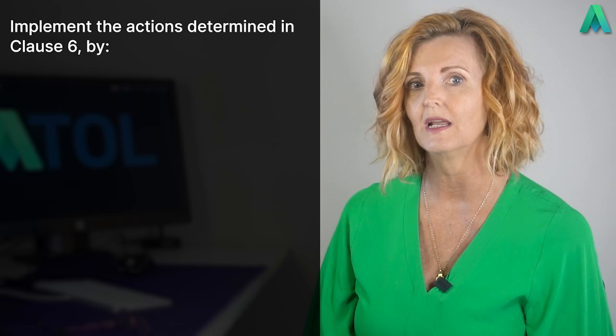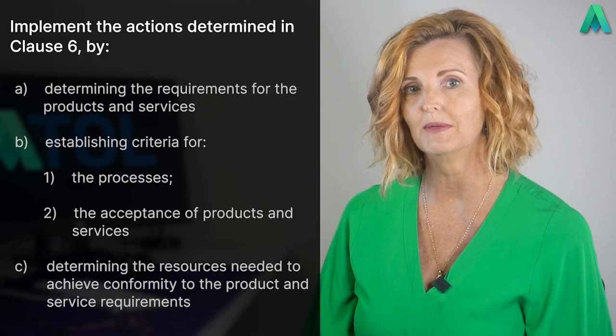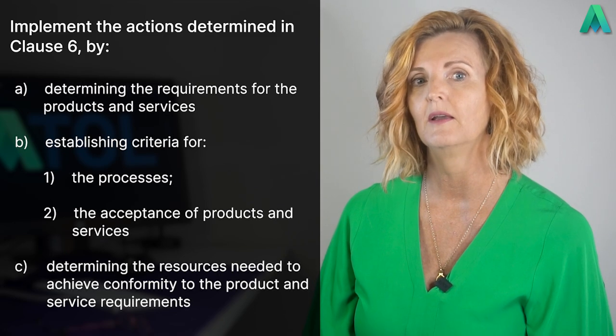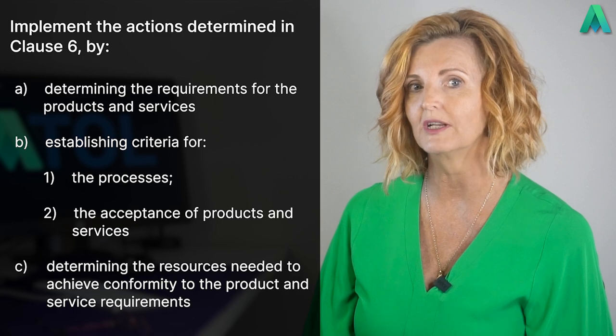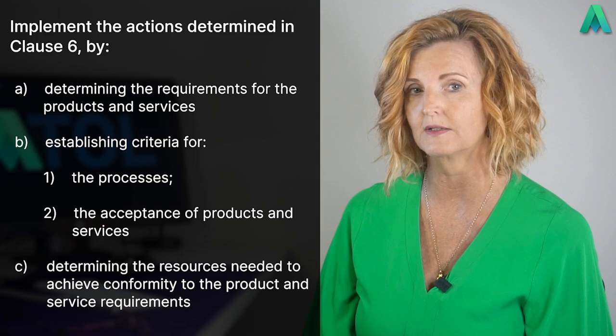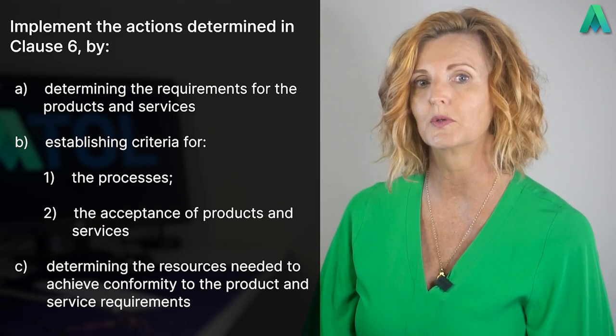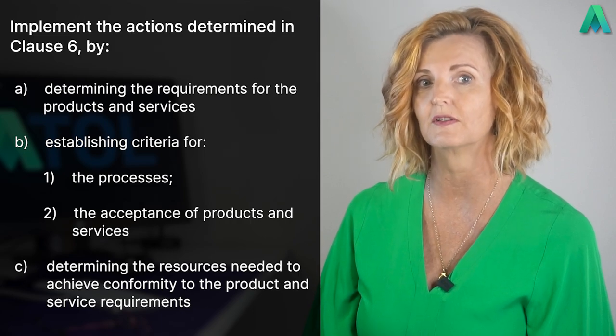We have to implement the actions determined in clause 6 by doing the following: A — determining the requirements for the products and services; B — establishing criteria for one, the processes, and two, the acceptance of products and services; C — determining the resources needed to achieve conformity to the product and service requirements.